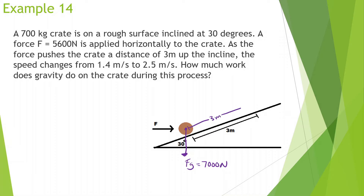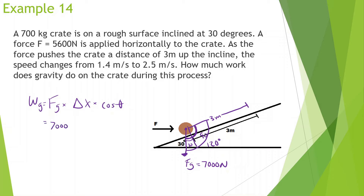The crate is moving 3 meters up the incline. I need the angle between gravity and the displacement. This angle is 90 degrees from the surface, and the incline is at 30 degrees, so the total angle from gravity to displacement is 120 degrees. Work of gravity equals force of gravity times distance times cosine of theta — that's 7,000 times 3 times cosine of 120, which equals negative 10,500 joules.